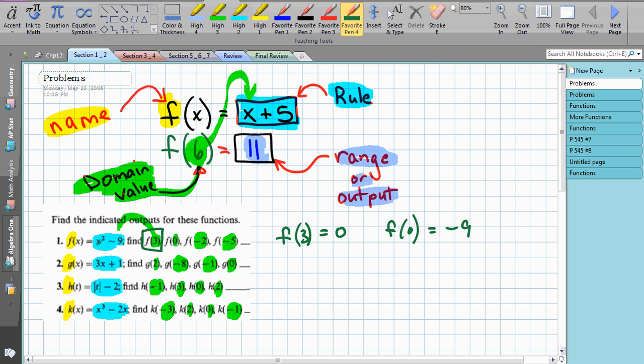Let's do one from number 3. Let's do h of negative 1. So this one's asking us to take negative 1 and plug it into the rule of h. So the absolute value of negative 1 is a positive 1 minus 2. That would give me a negative 1. Just a coincidence that the domain and the range happen to be the same number. It's not a big deal.